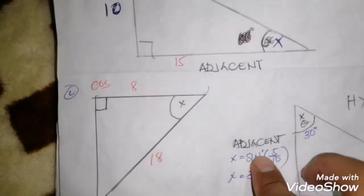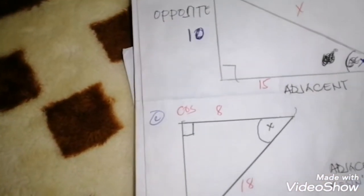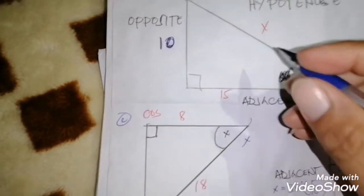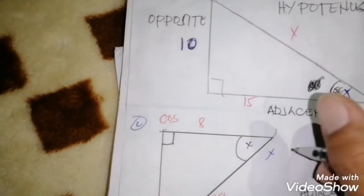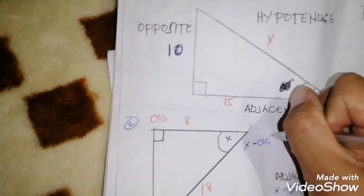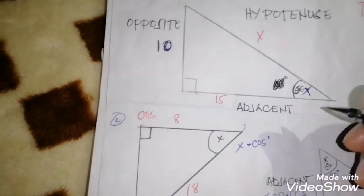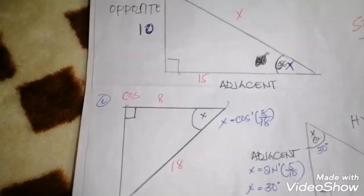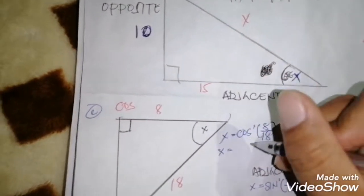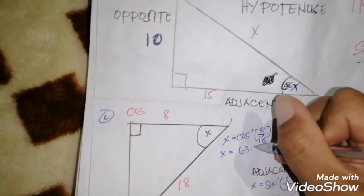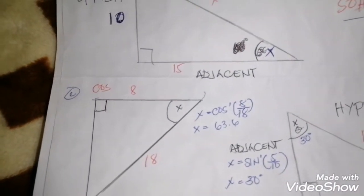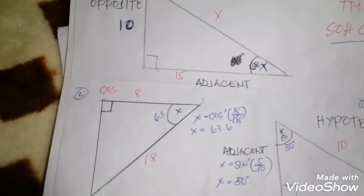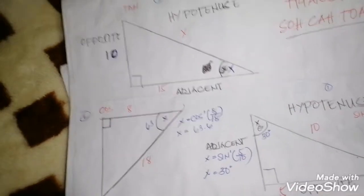For the second computation, we use cosine inverse. x equals cosine inverse — with 1 — divide 8 over 18. x equals 63.6 degrees. The answer for the degree here is 63 — you can use 63 or 63.6, depending on what is required.